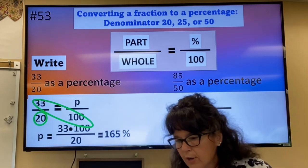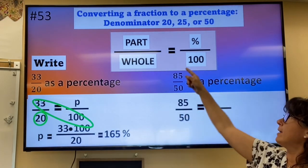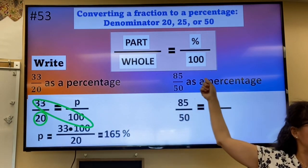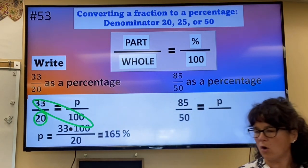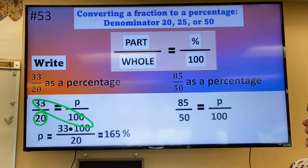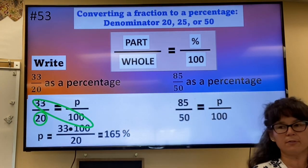So 85 over 50. And then set that equal to percent over 100. I do not know the percent. So I'm going to just call that P over 100. Now I'm ready to cross multiply, then divide.